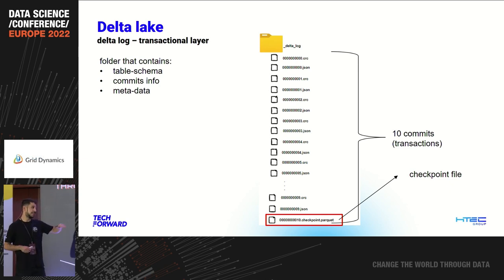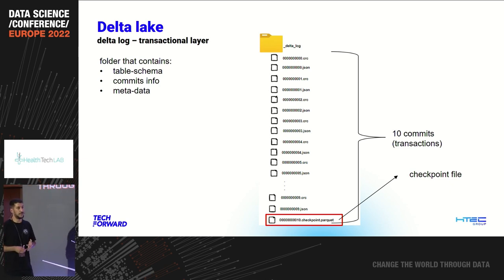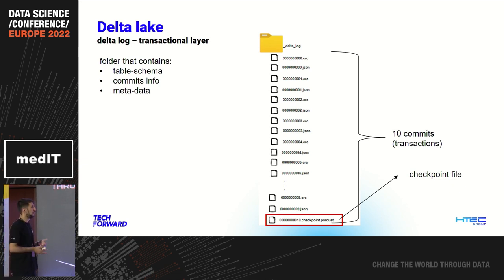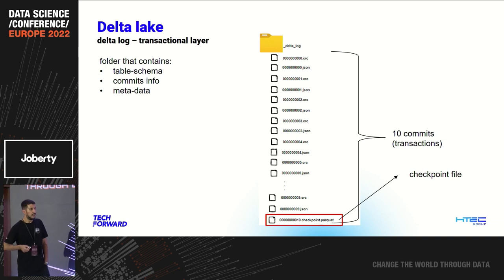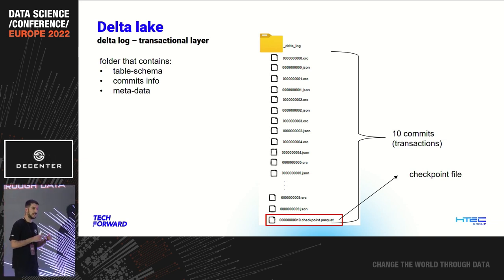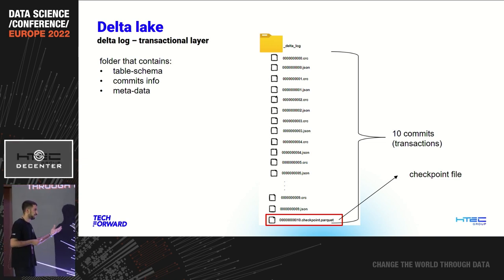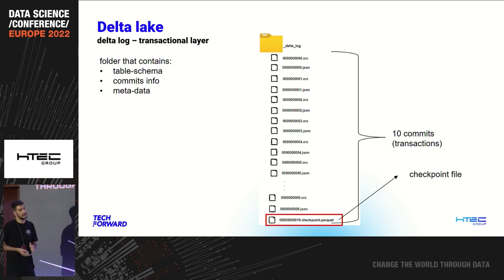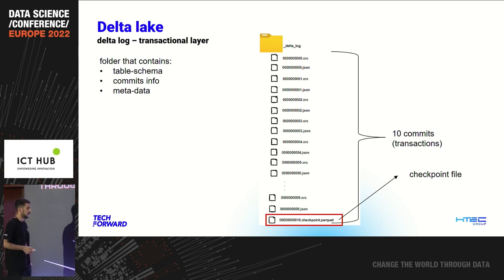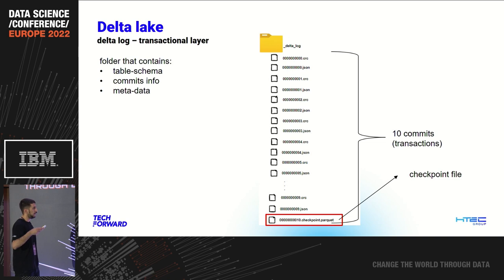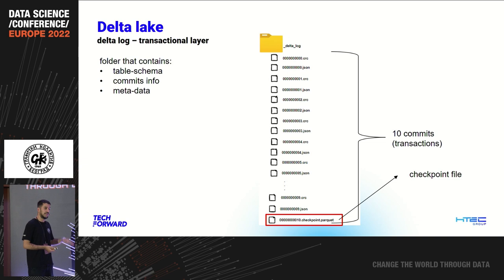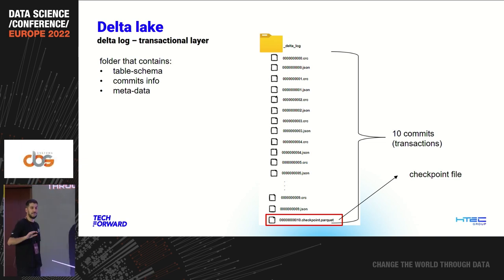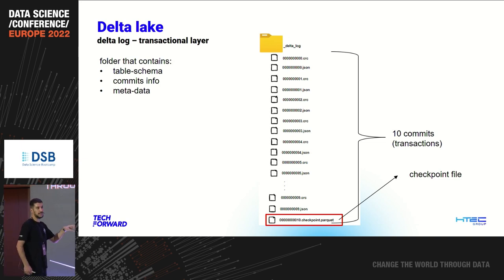I'll spend some time on the Delta log folder because it's the brain behind the Delta Lake tables. It's a transactional metadata layer that keeps information about your commits, the metadata from Parquet, and the table schema. For each commit — which is a transaction — we get a small JSON file containing the commit information. We can predict that if we have a million transactions, we'll have a million JSON files, which is not great. But Delta Lake creates a checkpoint Parquet file after every 10 commits, so the maximum number of JSON files you ever need to read is nine, plus that one checkpoint file. This solves the metadata scaling issue with Parquet.